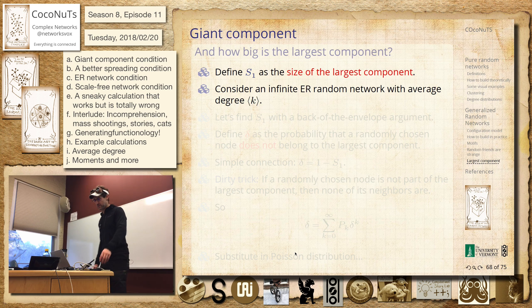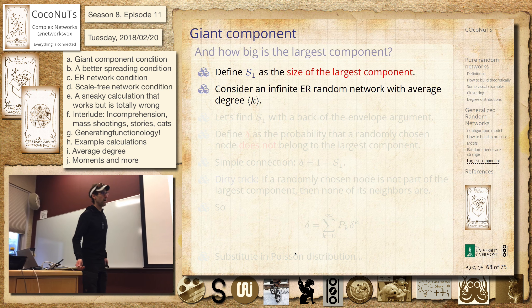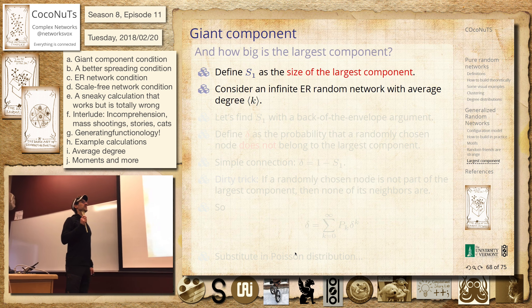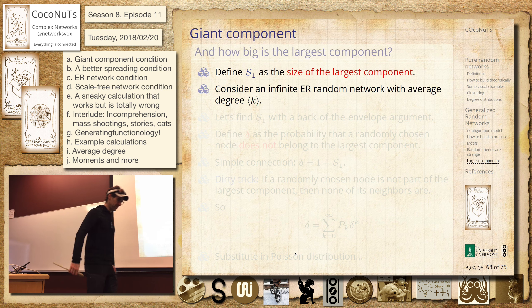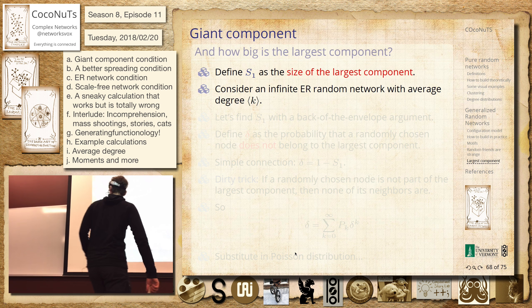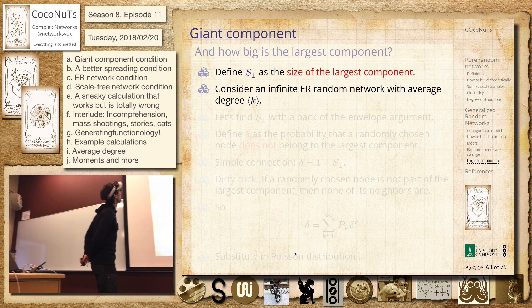Okay, so this is something. I'm going to show you a calculation that goes wrong, principally because of this fact that Poisson degree distributions give rise to P of K equals R of K, right? That's a weird feature of them.